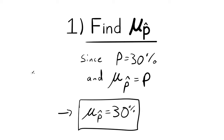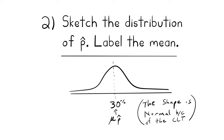The first question is the easiest: find the mean of the sampling distribution of P-hat. Since the mean of P-hat equals the population proportion, mu of P-hat equals 30 percent. The second question asks us to sketch the distribution of P-hat — that's a bell-shaped curve with the mean of 30 percent in the middle.